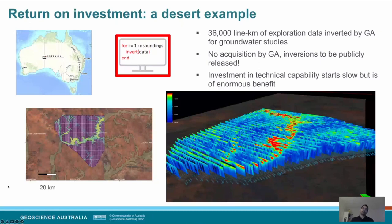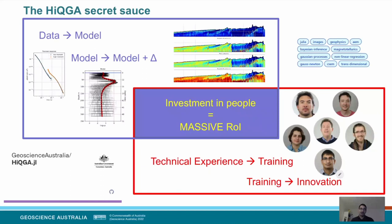This is our secret sauce: we convert data into models, we show you the uncertainty around those models, and we can do all of these things. But it requires a team of people. If you invest in people, while doing our work we're able to convert all that technical experience into training. Innovation doesn't come from someone waking up and having a great idea — it requires a lot of sustained effort and discipline. To end on that kitchen theme, all good kitchens need a wise and experienced chef. That's all of us clustered around Ross Brodie, whose long and illustrious career with Geoscience Australia has really allowed us to have this capability and offer it to the Australian public.